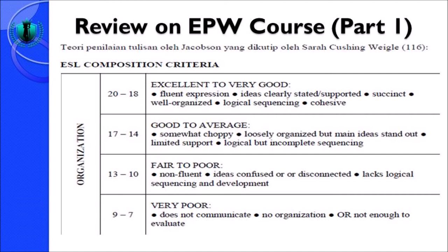The second aspect in assessing writing is organization. Similar to content, organization has four levels: excellent to very good, good to average, fair to poor, and very poor. To achieve excellent to very good (18–20), you need to show fluent expression, clearly stated and supported ideas, a succinct and well-organized paragraph, logical sequencing, and the use of cohesive devices. You need to show evidence of all these items to achieve that score.